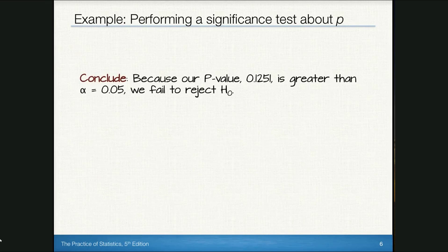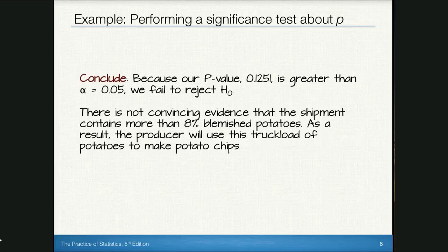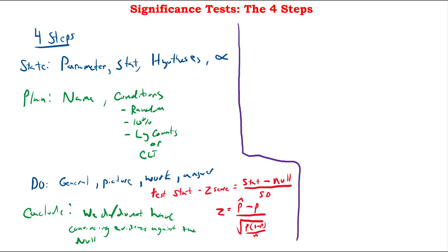Finally, we Conclude. Because our p-value of 0.1251 is greater than our alpha level, we fail to reject the null hypothesis. In context, that means there is not convincing evidence that the shipment contains more than 8% blemished potatoes. As a result, the producer can use this truckload of potatoes to make potato chips. As you can see, all four steps — State, Plan, Do, Conclude — were listed out and explained to reach the final conclusion.